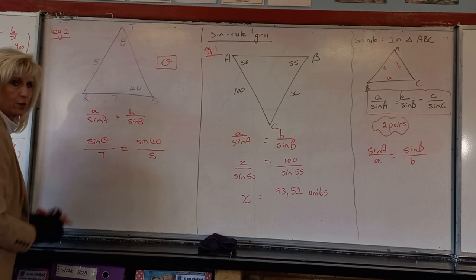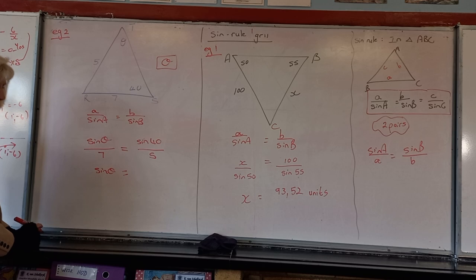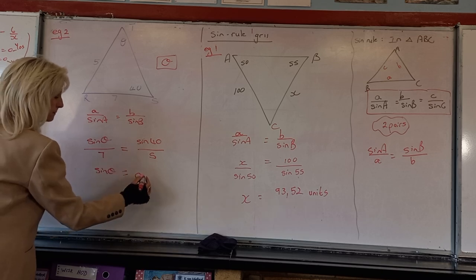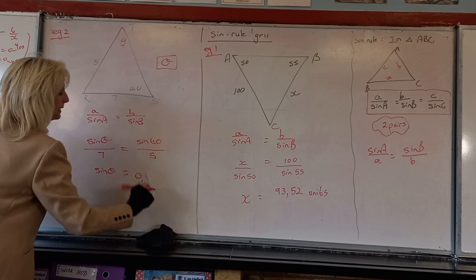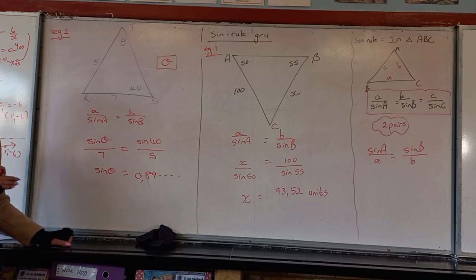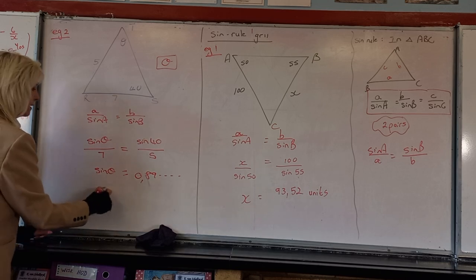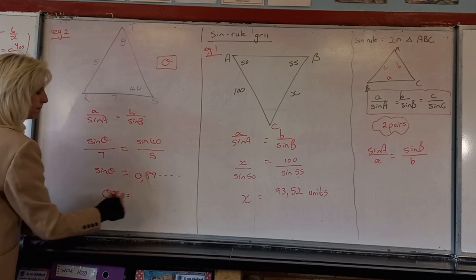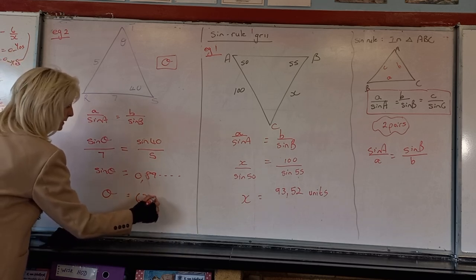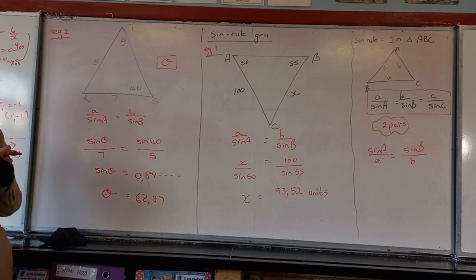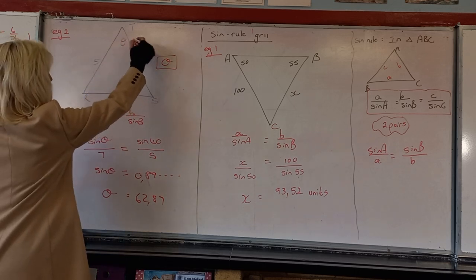Now solve for sin θ: sin θ = (7 × sin 40°) / 5 ≈ 0.8990. Don't round off at this stage — keep the full calculator answer. Then to find θ, press Shift + Sin (inverse sin) on your calculator. The answer rounds to approximately 62.87°.